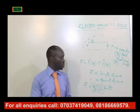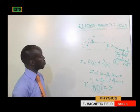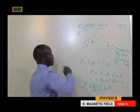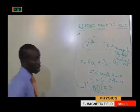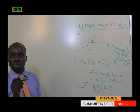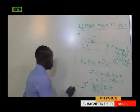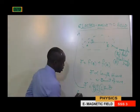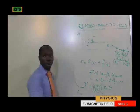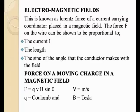So you understand? This is just the general force under electric and magnetic field. Now, force on the moving charge — what is the formula? For the force on the moving charge, you have what we call QVB sin theta. So that would be the force on the moving charge.